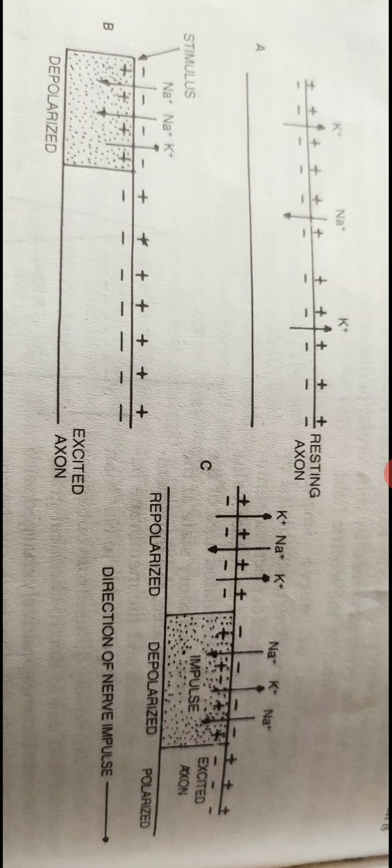A repolarized nerve fiber has the same polarity as that of a polarized nerve fiber but has different ionic distribution. It has more potassium ions outside and sodium ions inside.